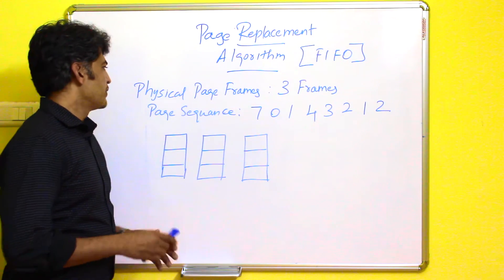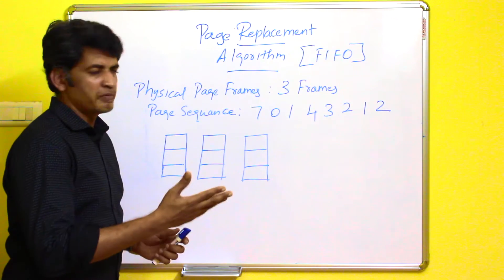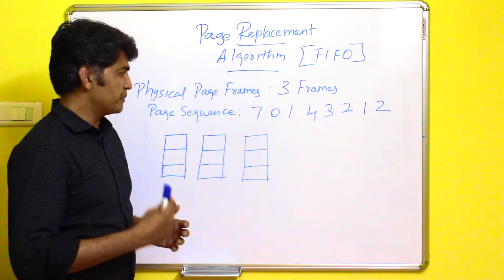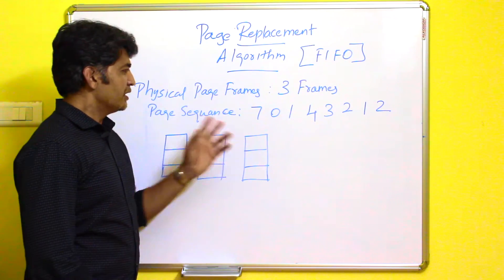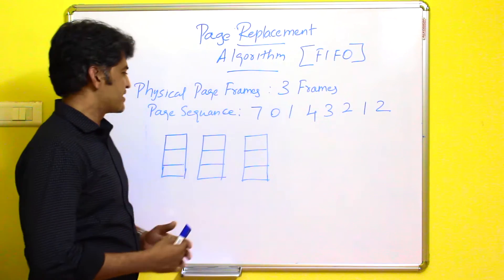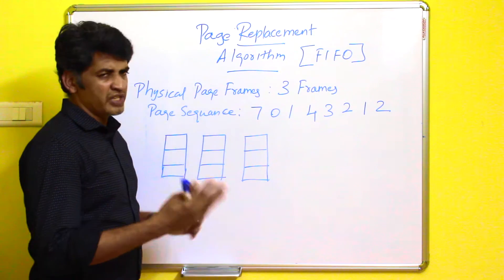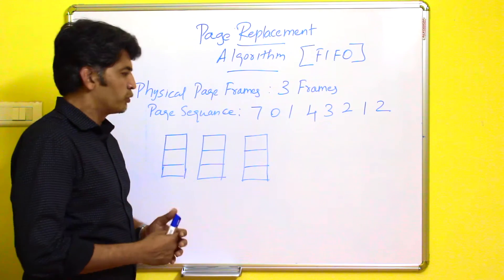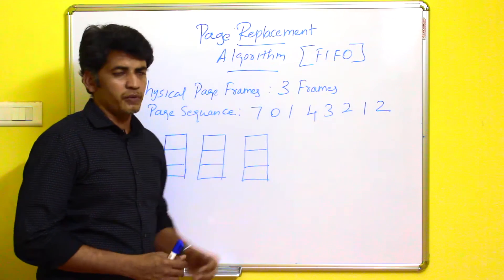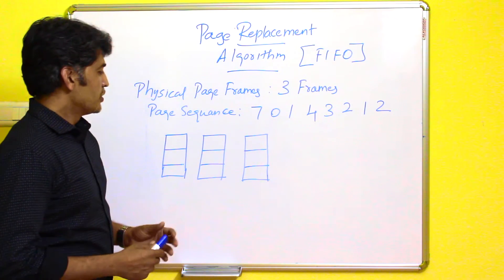Here we just consider physical frames. Physical memory is divided into a number of frames for the paging concept. We are limiting to three frames for this example. This is the page sequence required to execute the process.